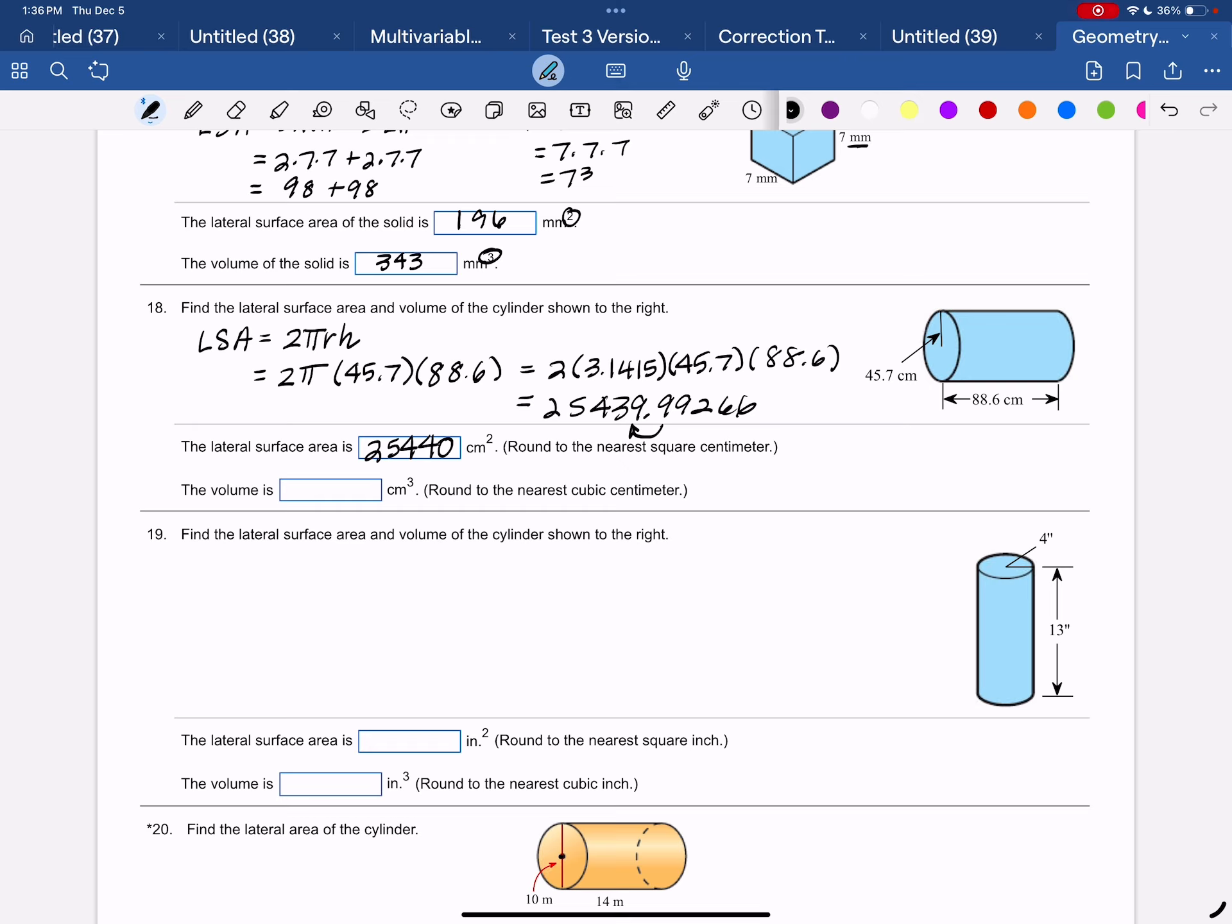The volume is pi R squared height, 3.1415 times 45.7 squared times 88.6 gives us a big number, 581,303.8. So 581,304 cubic centimeters to fill up the shape.